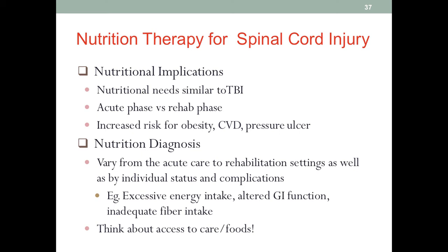The nutritional needs for a spinal cord injury patient are similar to those with traumatic brain injury — we have the acute phase versus the rehab phase. The acute phase is a classic stress condition with metabolic stress and critical illness. If the patient survives the acute phase and stabilizes into rehab, the nutrition needs will clearly differ.